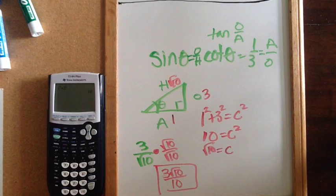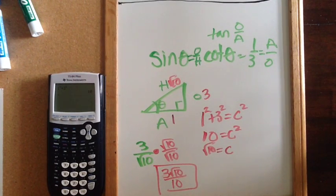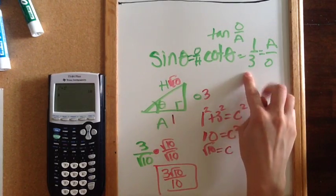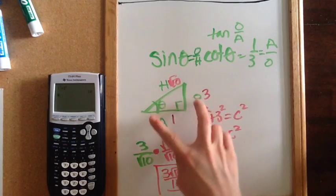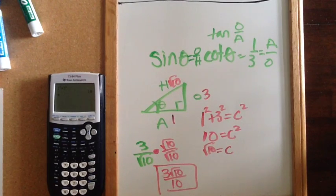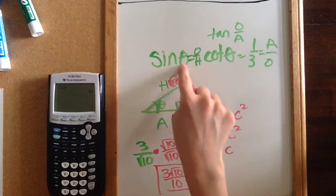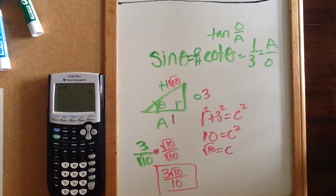And that's how you find another trig ratio when you have a trig ratio that's given. You need to draw a right triangle, label your sides, attach the ratio you know to the sides they belong to, find the missing side, and then find the ratio that you're interested in.